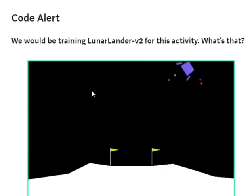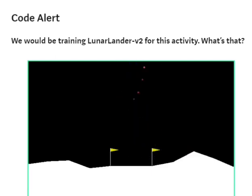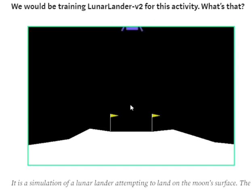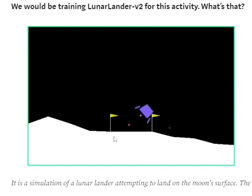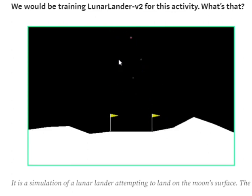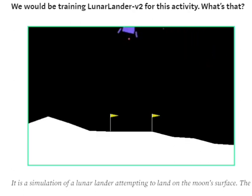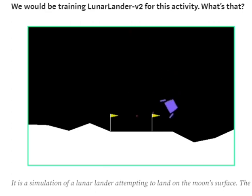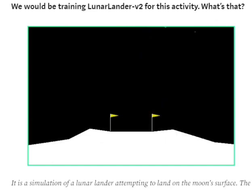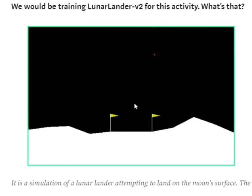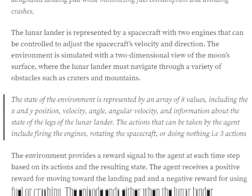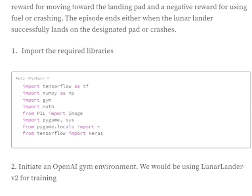Now we move on to the code. We will train a LunarLander-v2 OpenAI Gym environment. The LunarLander-v2 environment has an aircraft that needs to land between two flags on a landing pad. There are three actions: fire up the engine, rotate the engine, or do nothing. The state is represented by a 1D array of eight variables, including x and y coordinates, velocity, angular velocity, and more. The reward function gives positive rewards as the aircraft gets closer to the landing pad and negative rewards when it moves away.